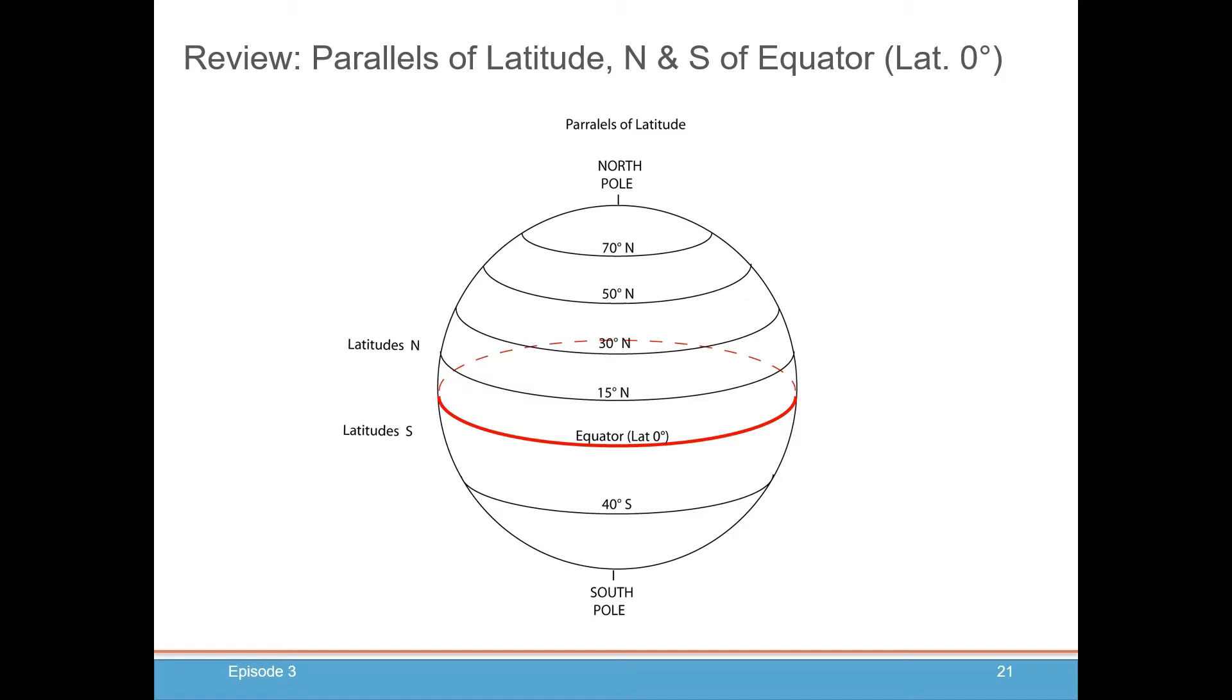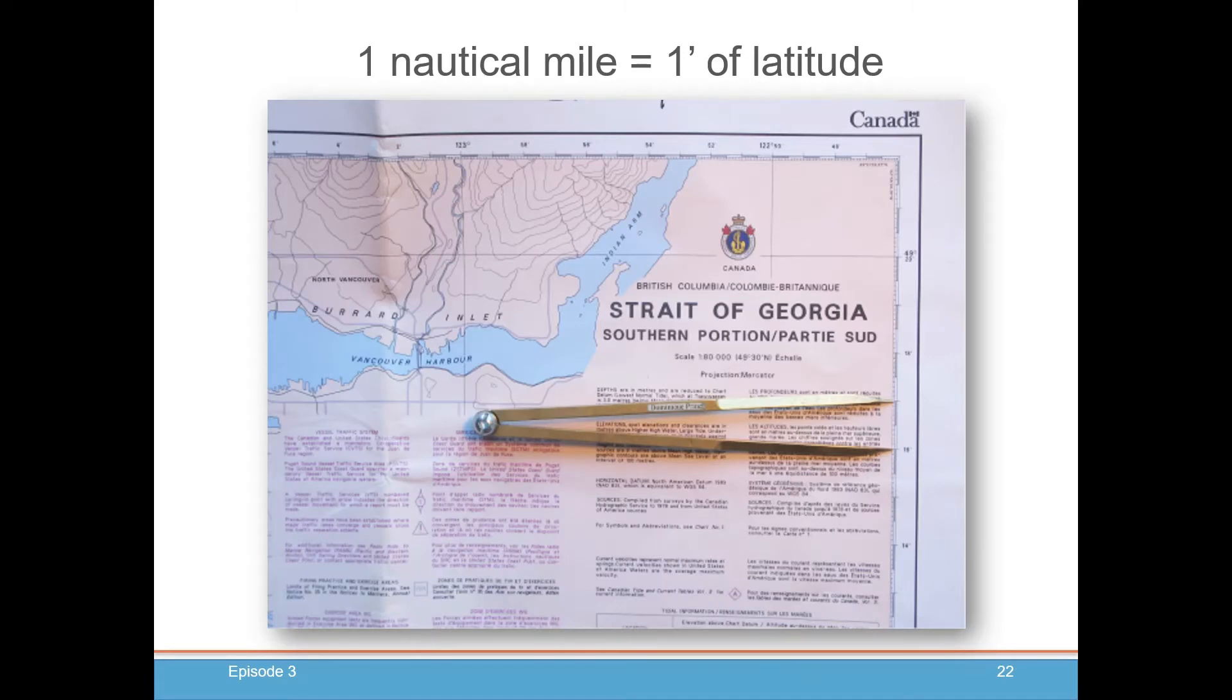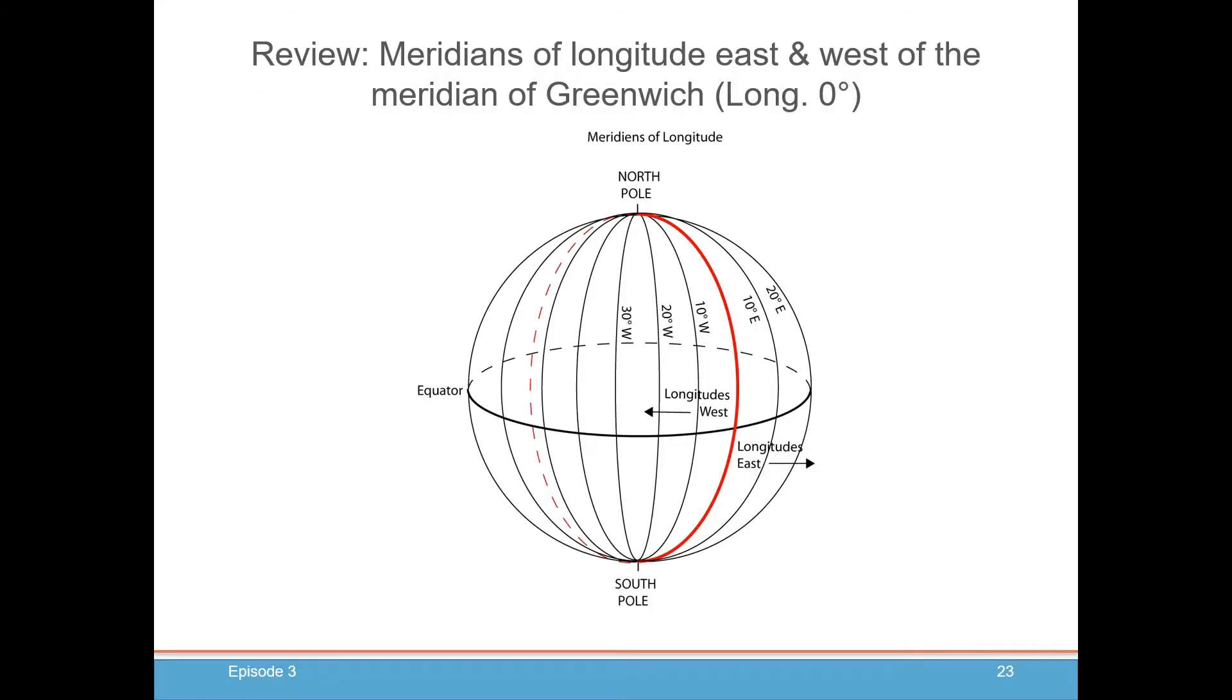An interesting thing about latitudes is that one minute of latitude equals one nautical mile. That's about 6,000 feet or roughly 1,800 meters. When we're trying to find distance, we always use the latitude scale to measure distance in nautical miles.